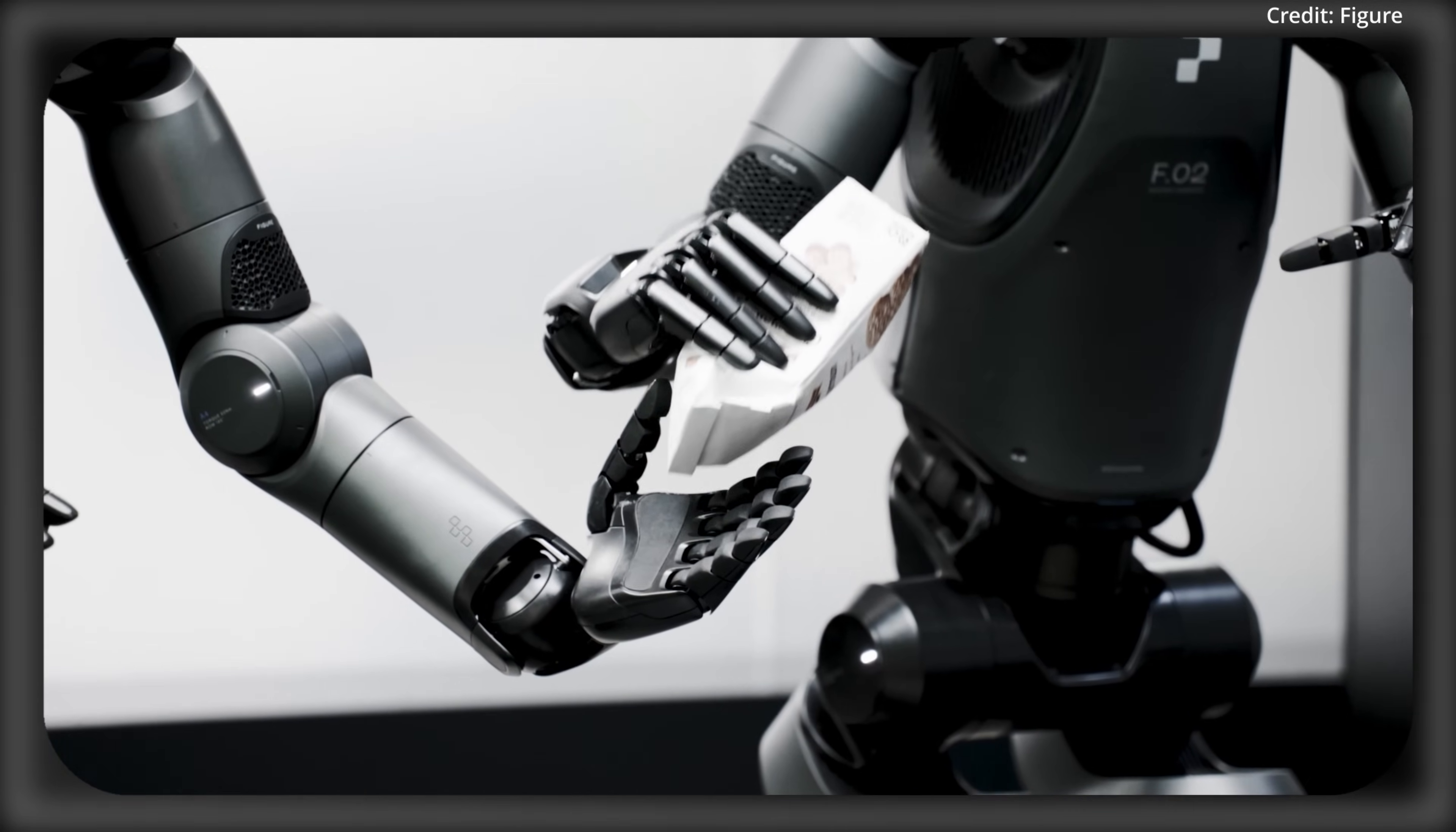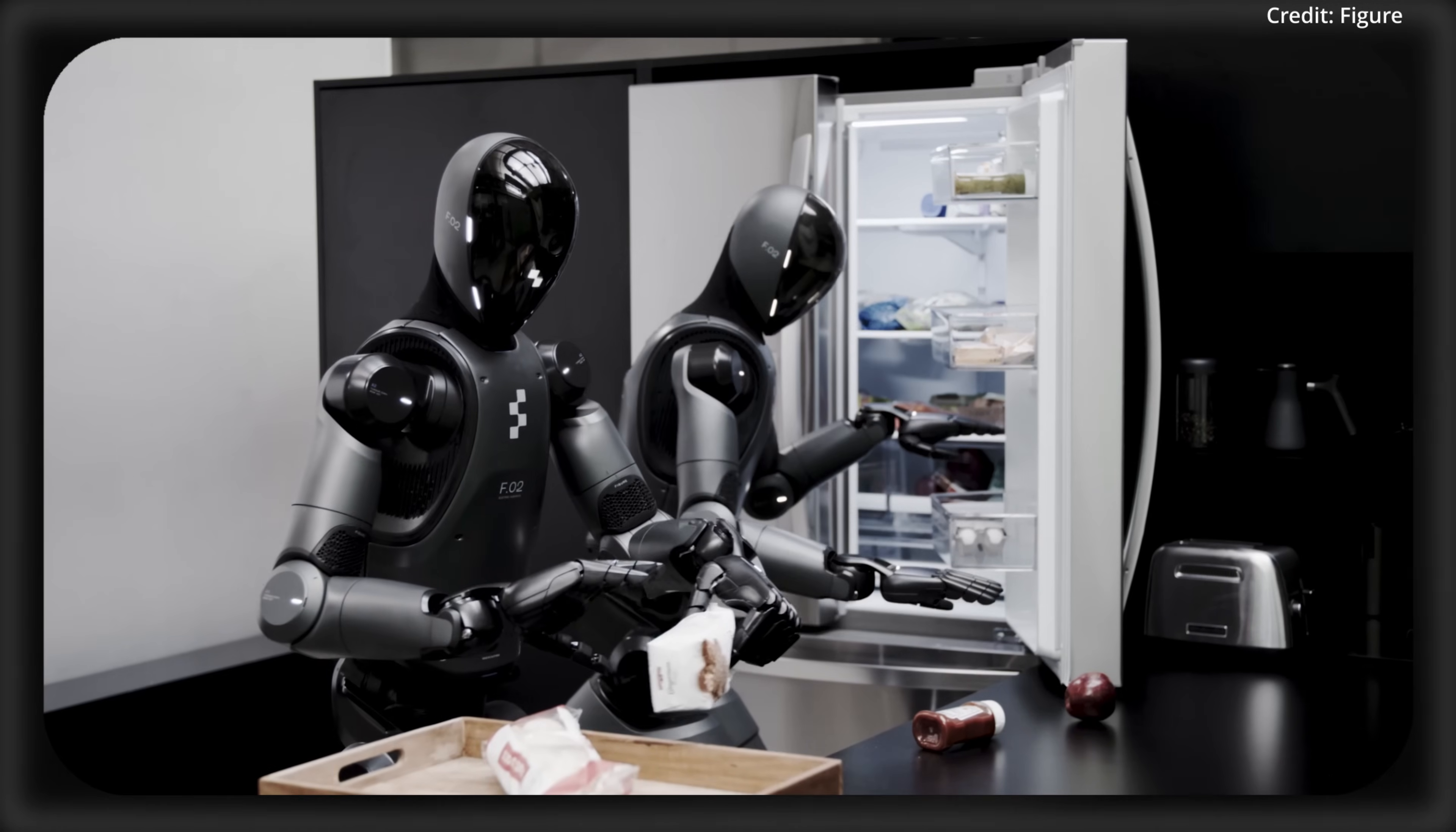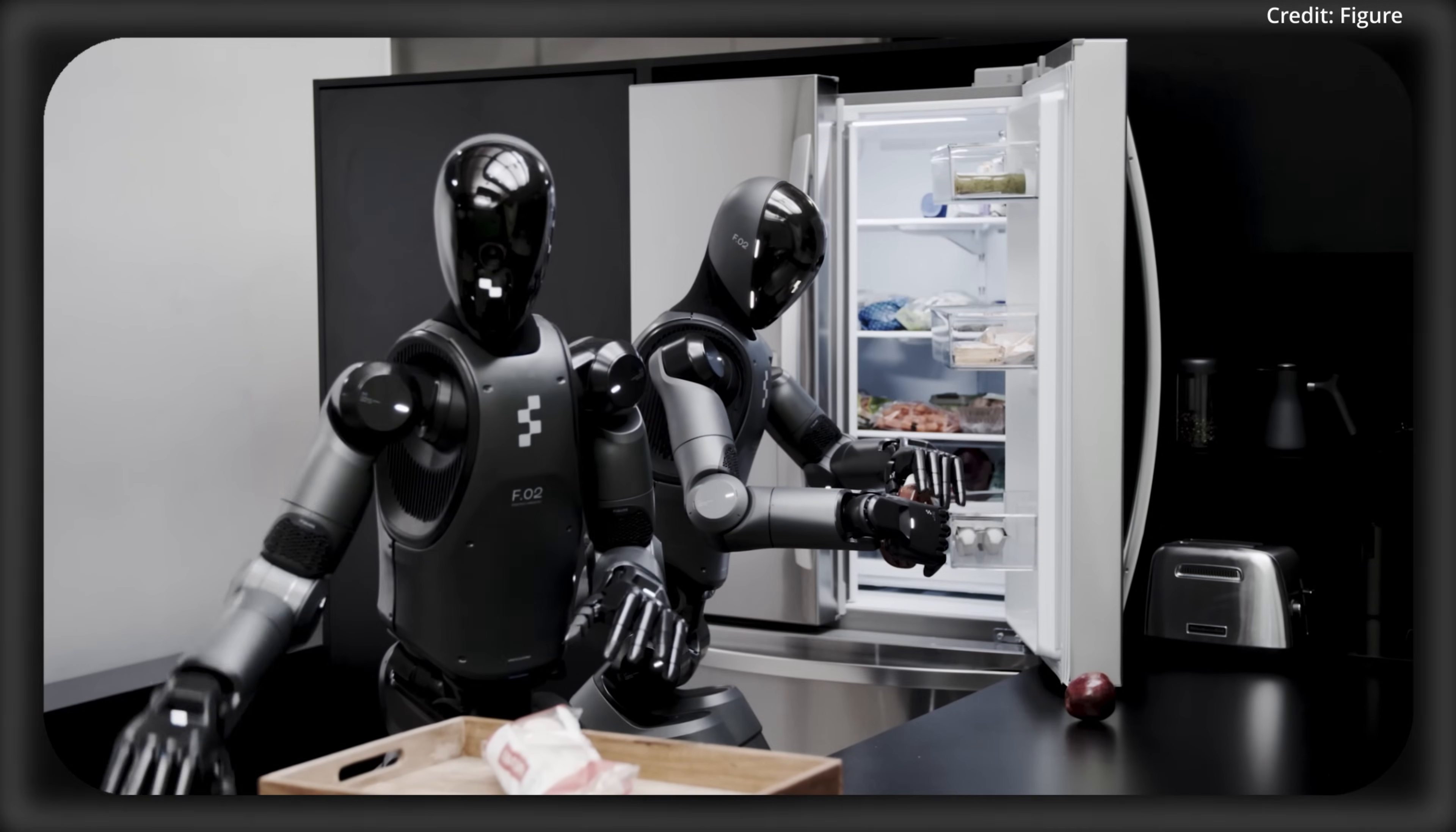This results in the distillation of the VLM's commonsense smarts into flexible, real-time control, with Helix allowing robots to learn as fast as humans can speak to them. But it's all made possible with the following five first-ever tech breakthroughs.